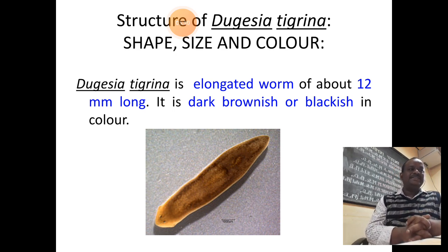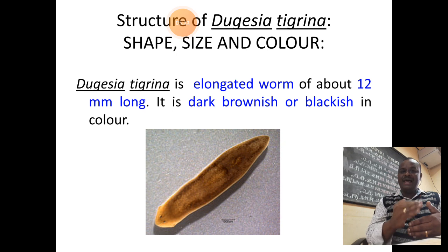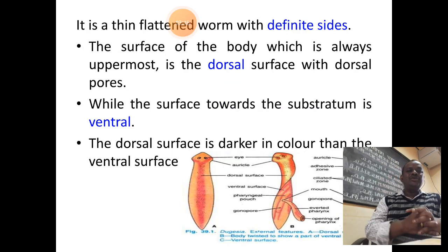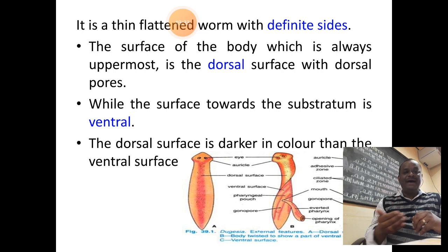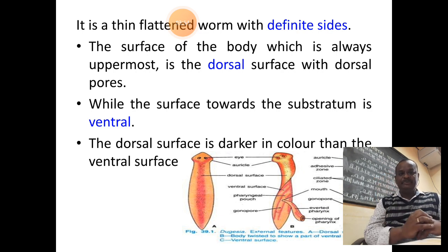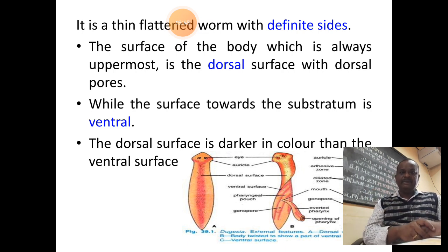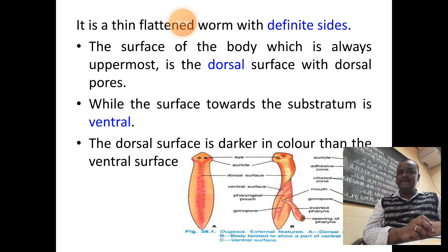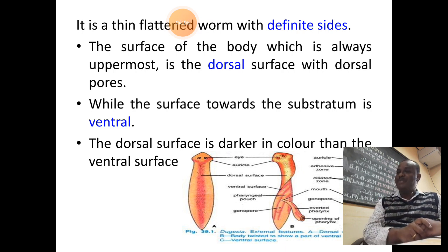The shape of Dugesia is elongated and worm-like. Its size is around 12 millimeters long and the color ranges from dark brownish to blackish. It is a thin platform having two polarities: antero-posterior, which refers to top to bottom, and dorsal-ventral, meaning upper and lower surfaces. The dorsal surface faces the water above, while the ventral surface faces the substrate to which it attaches.